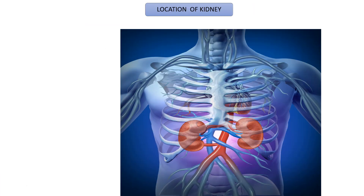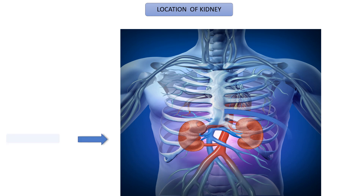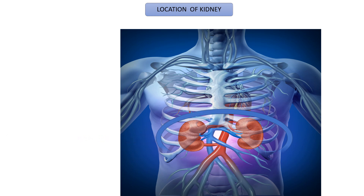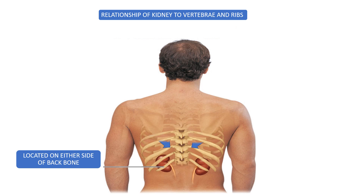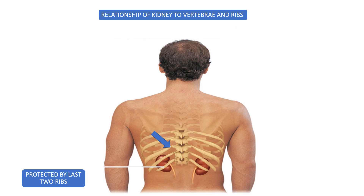Now let us see the location of the kidneys. These are located in the abdomen region. If you see the kidneys from the back side, these are located on either side of the backbone and well protected by the last two pairs of ribs.